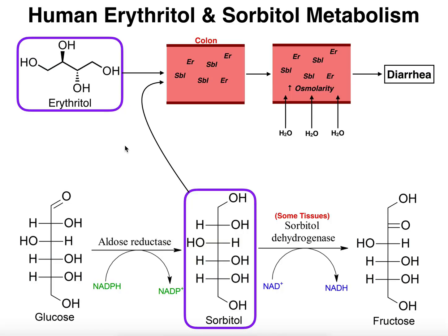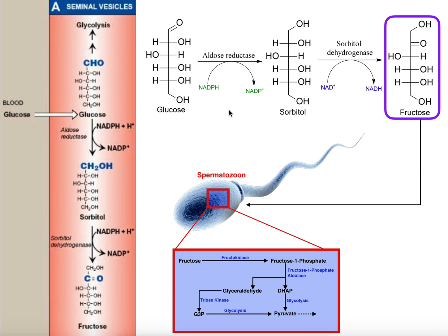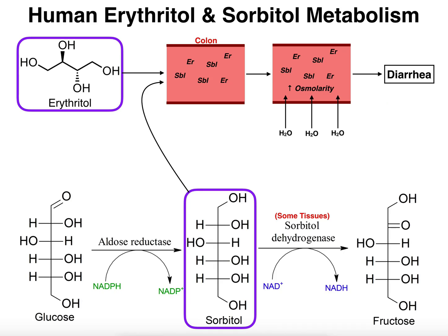Hopefully this video gave you a good understanding of what happens when you consume erythritol and sorbitol from a dietary supplement or sweetener. We also saw that sorbitol has other functions as an intermediate in the polyol pathway, whereby sperm cells can derive metabolic energy. Please make sure to like this video and subscribe to my channel for future videos and notifications. Thank you very much.